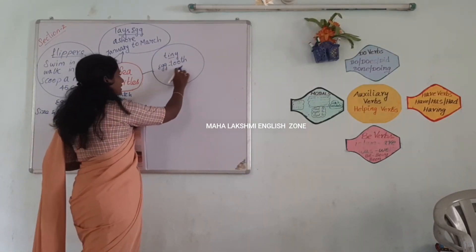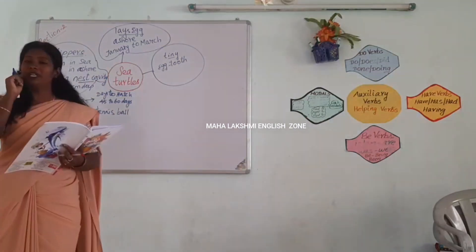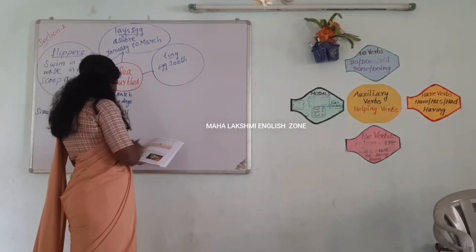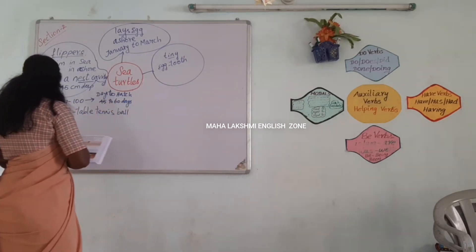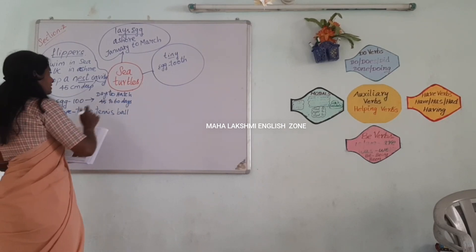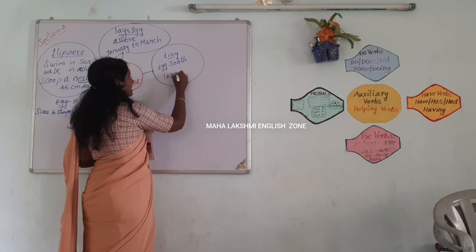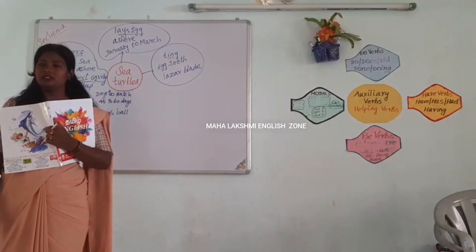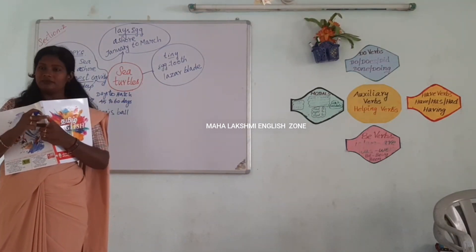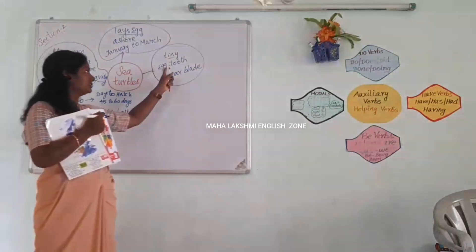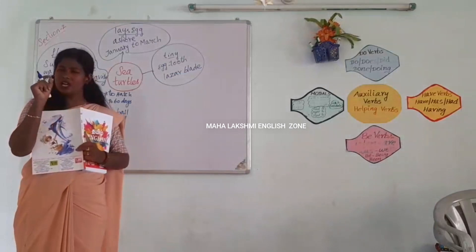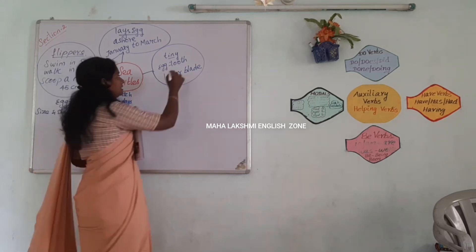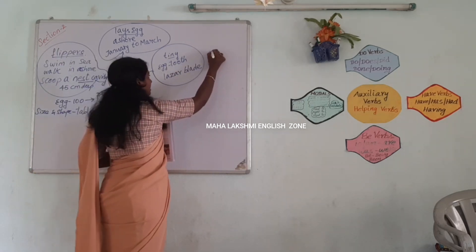The thing used to break the shell is called egg tooth. With the help of egg tooth, the shell is broken. Egg tooth is like a laser blade — very small and very sharp. It helps the egg to hatch.